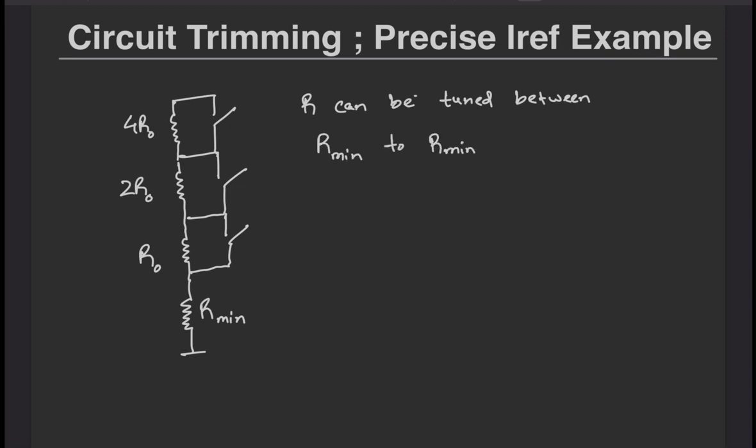So if the switch is on, you would essentially bypass the resistor because we will design the on resistance to be much smaller than the resistor value.